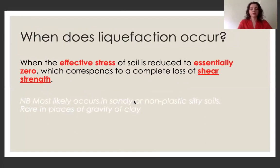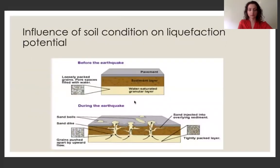So at what exact point does liquefaction occur? Well, it's essentially the point when the effective stress of the soil is reduced to zero, which corresponds with a complete loss of shear strength. And just a note here that this rarely happens in places of gravity of clay and most likely will occur in sandy or non-plastic silty soils. So this is just a nice summary diagram of what can happen to the soil layers during ground shaking from an earthquake. And we can see a few physical features that are shown on the surface of the soil, such as sand boils.